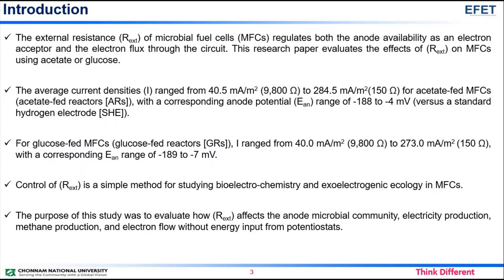Introduction. The external resistance of microbial fuel cells regulates both the anode availability as an electron acceptor and the electron flux for the circuit. This research paper evaluates the effects of external resistance on MFCs using acetate or glucose. The average current densities range from 40.5 mA/m² to 284.5 mA/m² for acetate-fed MFCs, with a corresponding anode potential range of minus 188 to minus 4 millivolt.